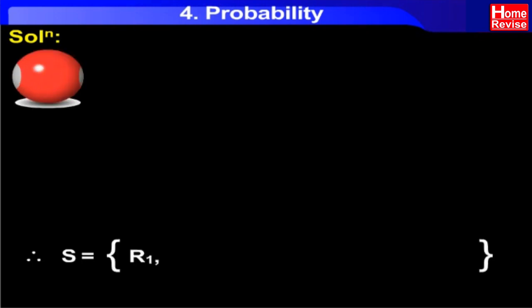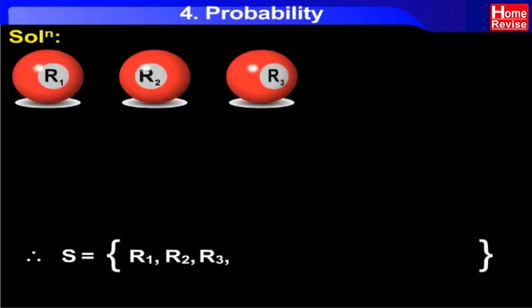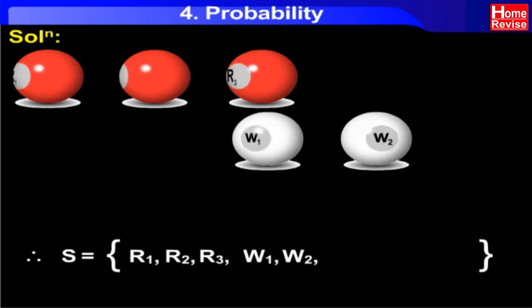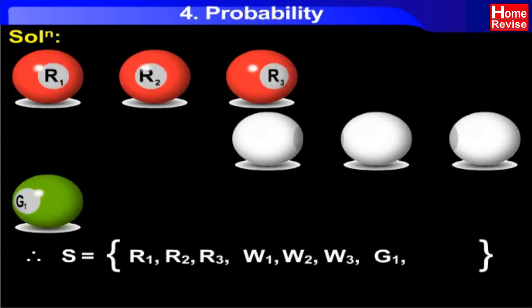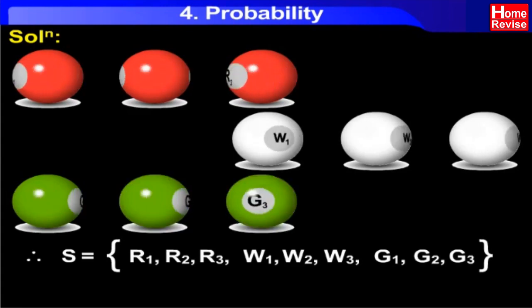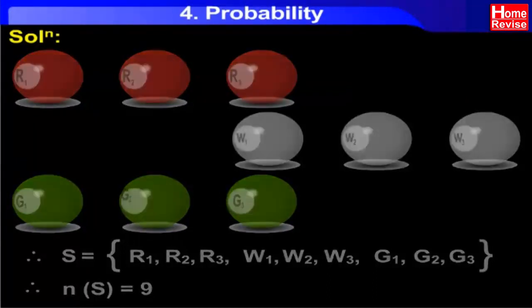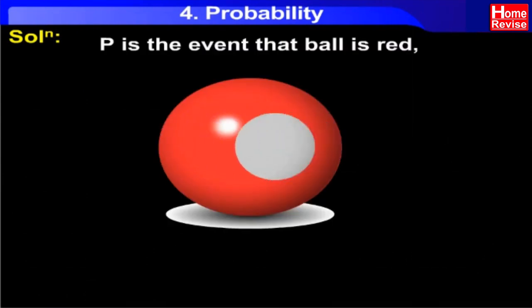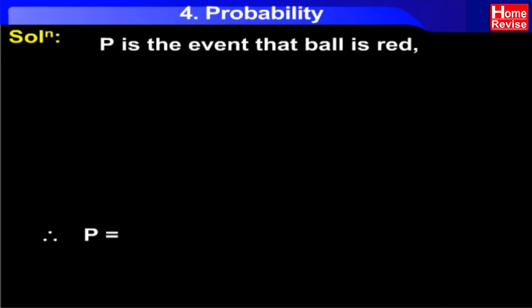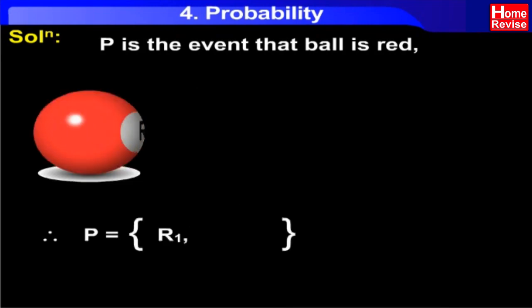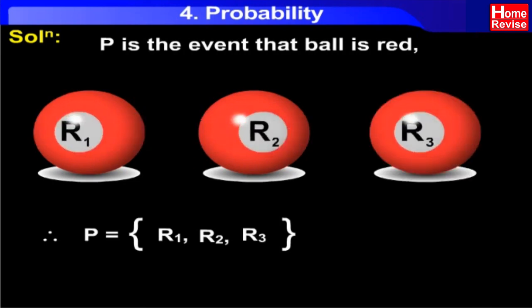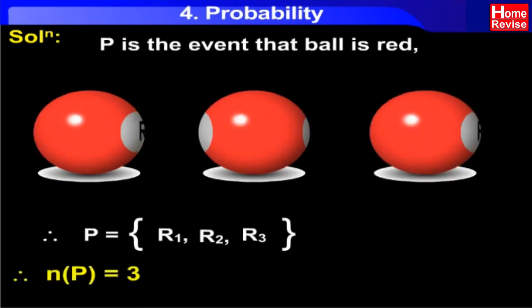Therefore, sample space S is equal to { R1, R2, R3, W1, W2, W3, G1, G2, G3 }. Therefore N(S) is equal to 9. Now P is the event that the ball is red. Therefore P is equal to { R1, R2, R3 }. Therefore N(P) is equal to 3.